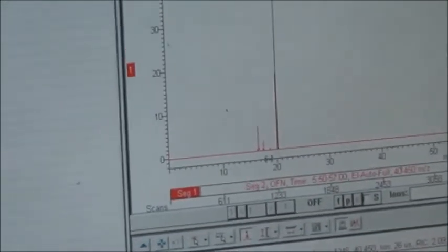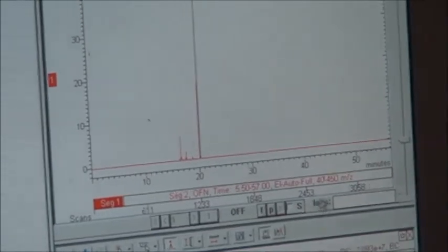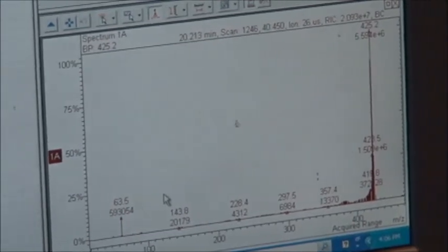Each peak represents separation. On the x-axis, that's your time in minutes. The bottom section represents the MS component, which is the actual fragmentation pattern of the sample.